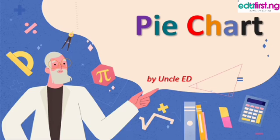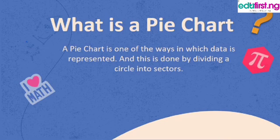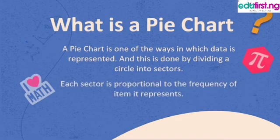What is a pie chart? A pie chart is one of the ways in which data is represented. Data can be represented using a bar graph, a histogram, or a pie chart. Today we're focusing on a pie chart. It is done by simply dividing the circle into sectors.